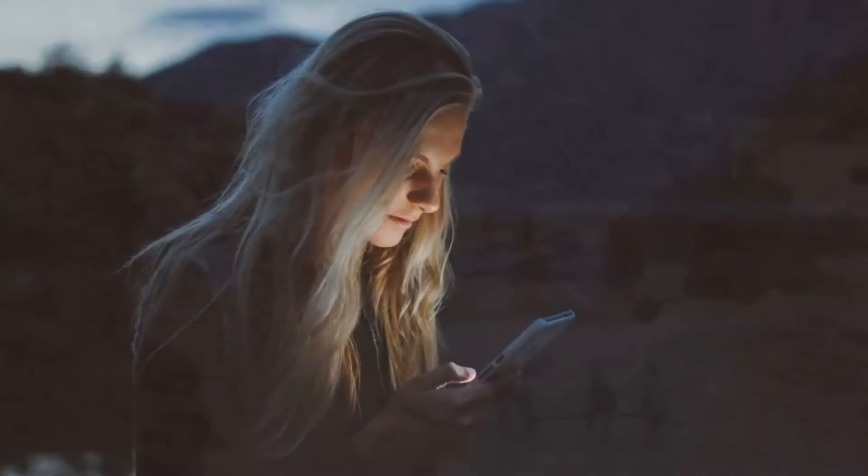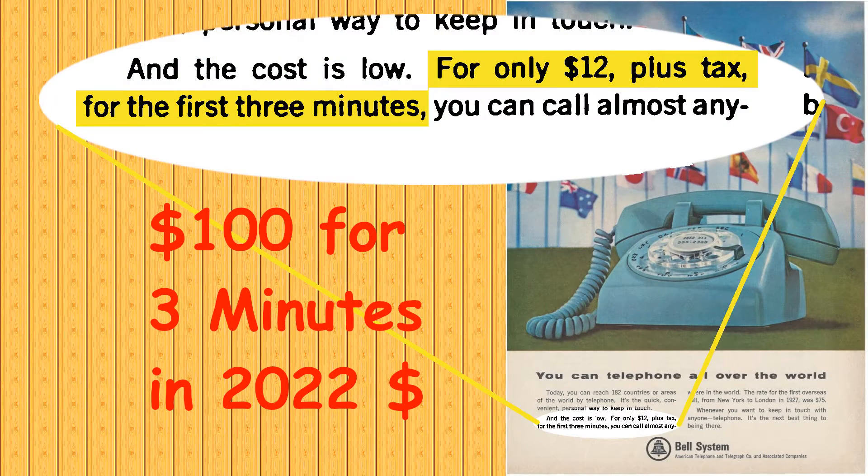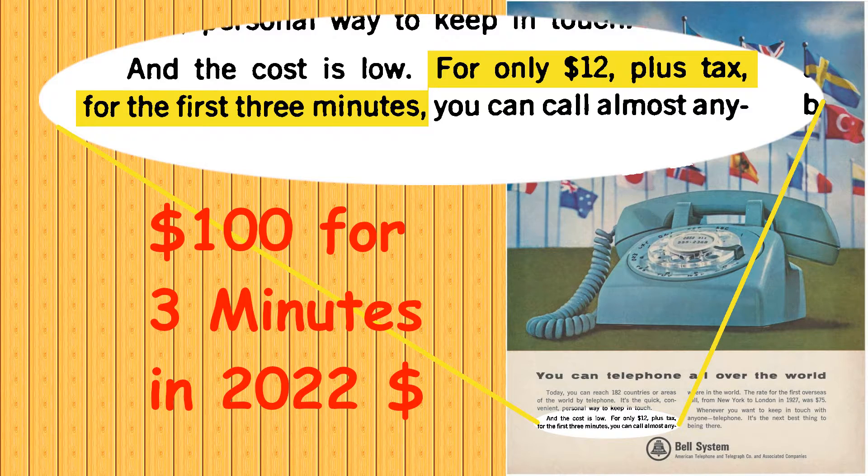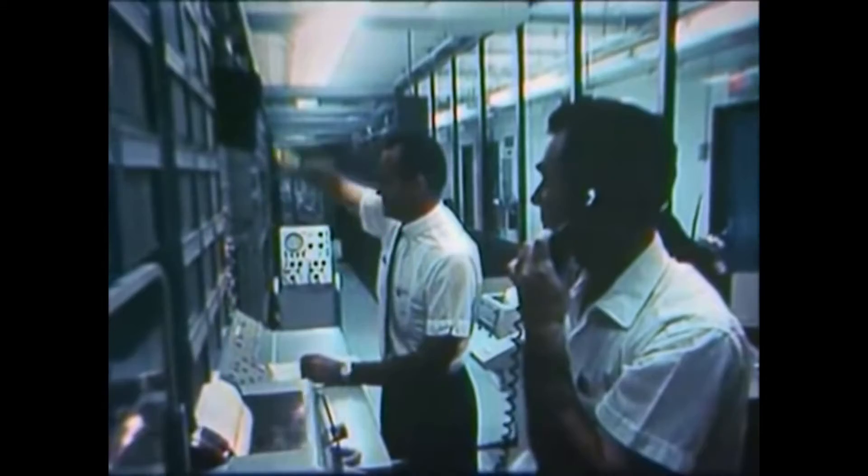The current rollout of the 5G mobile network should bring about 100 megabits per second of bandwidth to your cell phone. But in the early 1960s, telecom bandwidth was limited and expensive. An international telephone call, inflation adjusted to 2022, cost the equivalent of $100 for the first three minutes.